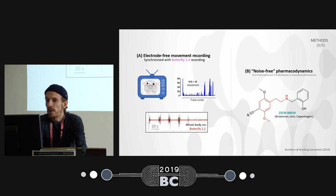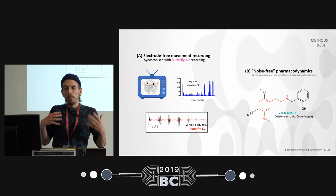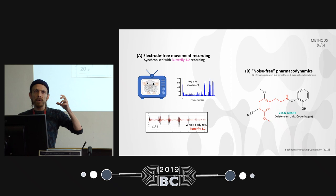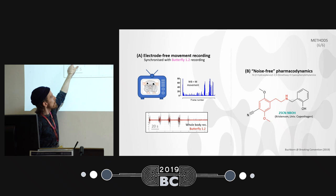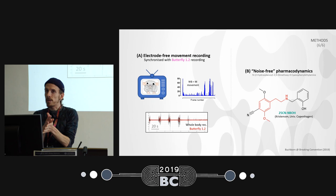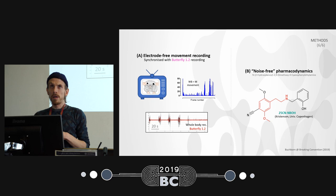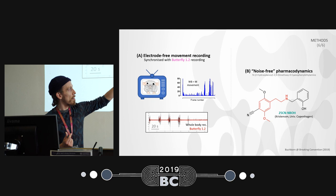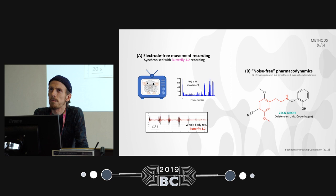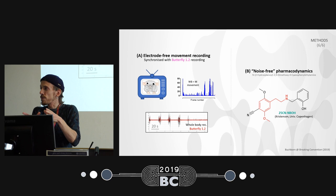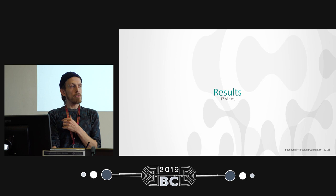For recording the animals' movements, we simply videotape the animals, zoom in, and translate the pixel variation in the video into traces. The red trace is the brain signal and the black trace is the video signal, and you can see they neatly overlap, allowing us to synchronize brain activity with what the animals are doing. The drug we use is 25CN-NBOH, a phenethylamine like mescaline. We use it because it is very selective for the serotonin 2A receptor, reducing the pharmacodynamic noise from interactions with other receptors.